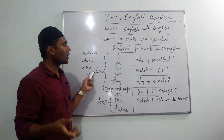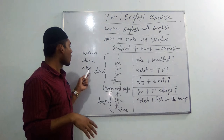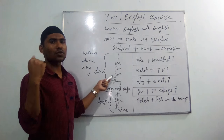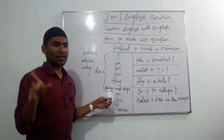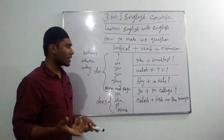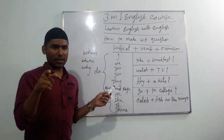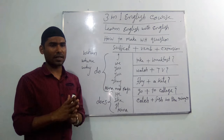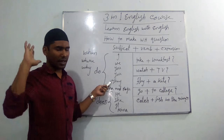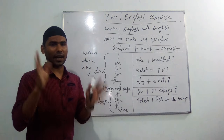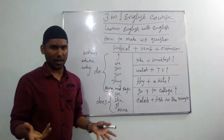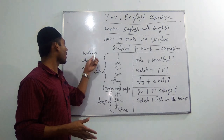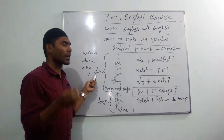We can also make 'why' questions with another extension. 'Why do I fly a kite?' 'Why do you fly a kite?' 'Why does she fly a kite?' For answers: 'Why do you fly a kite?' — I fly a kite because it's my hobby. 'Why does she fly a kite?' — She flies a kite to pass her free time. 'Why do they fly a kite?' — They fly a kite to pass their free time. By this way, we can make different questions using 'why' before these basic questions.